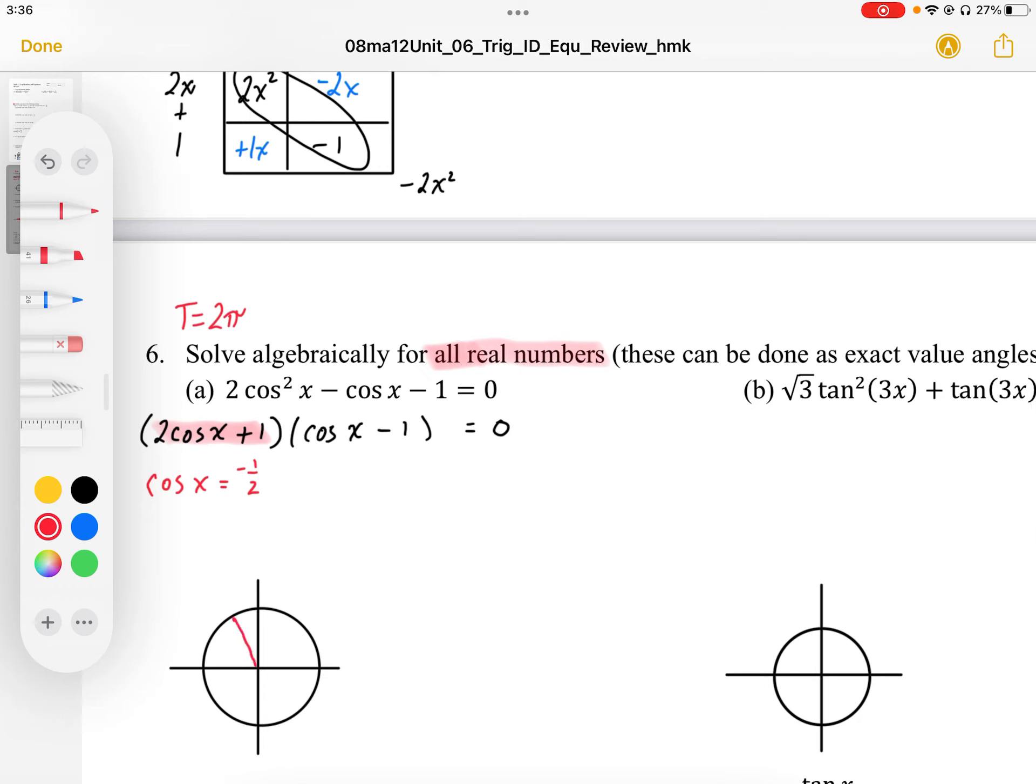Cos x equaling negative 1/2 is going to be in this quadrant over here and in this quadrant over here. That 1/2 is a short side horizontal, so it's going to look like this. I know that position here, that theta 1 or x, is going to be at 2π/3, which is 120 degrees. And then I have another x here down here, and that's going to be at 4π/3.